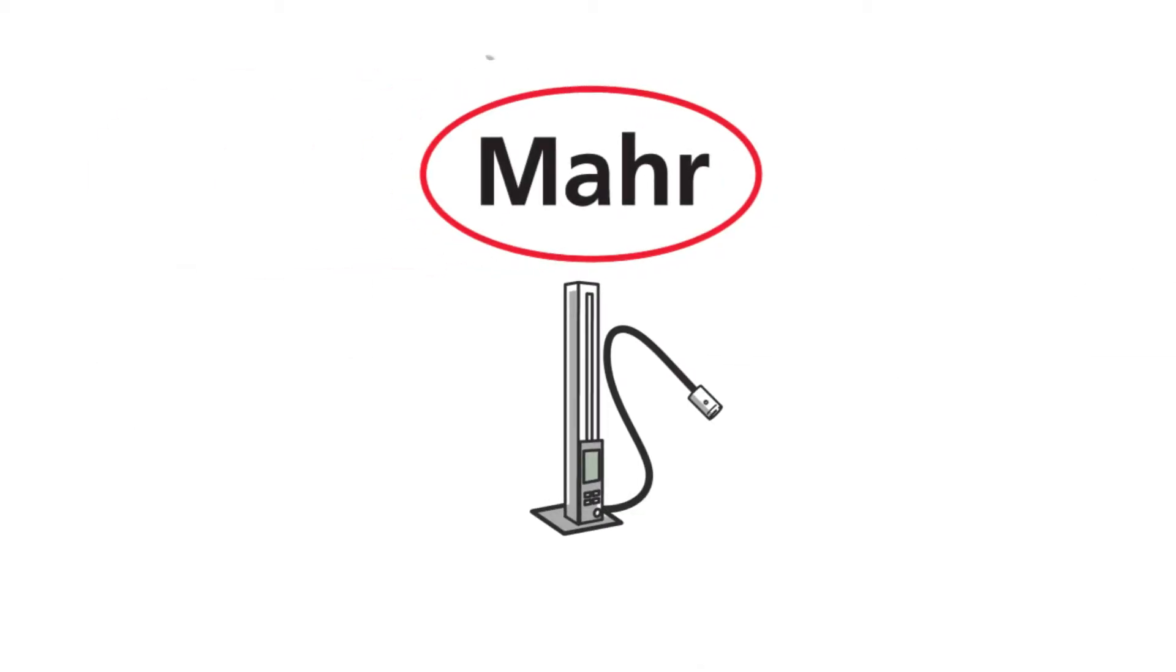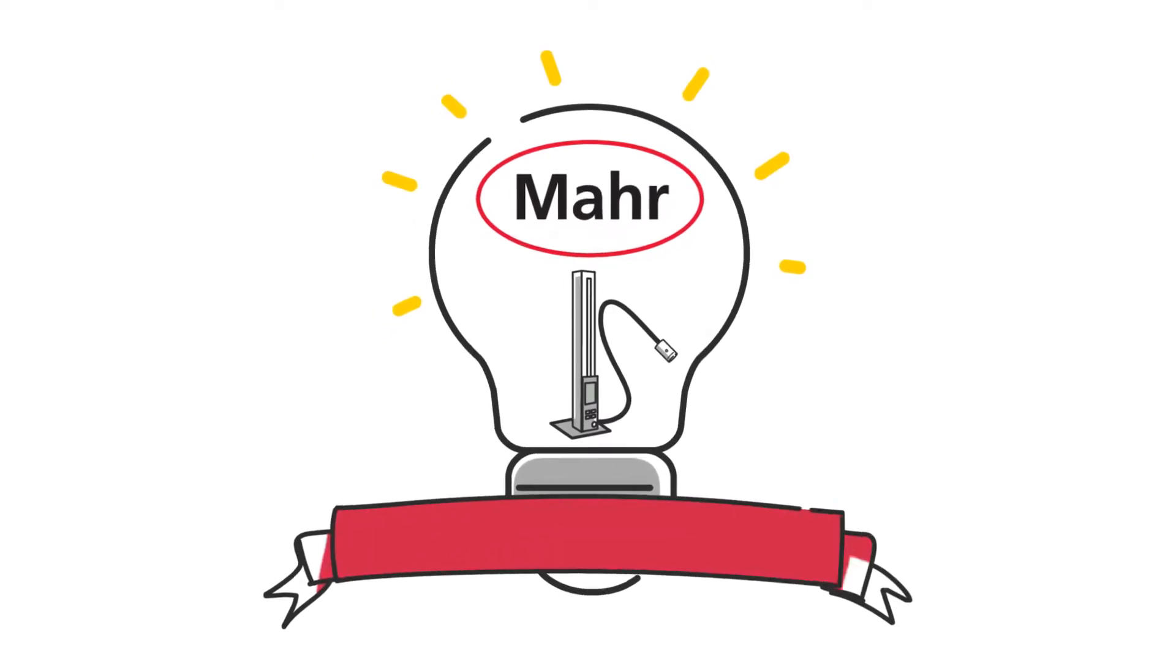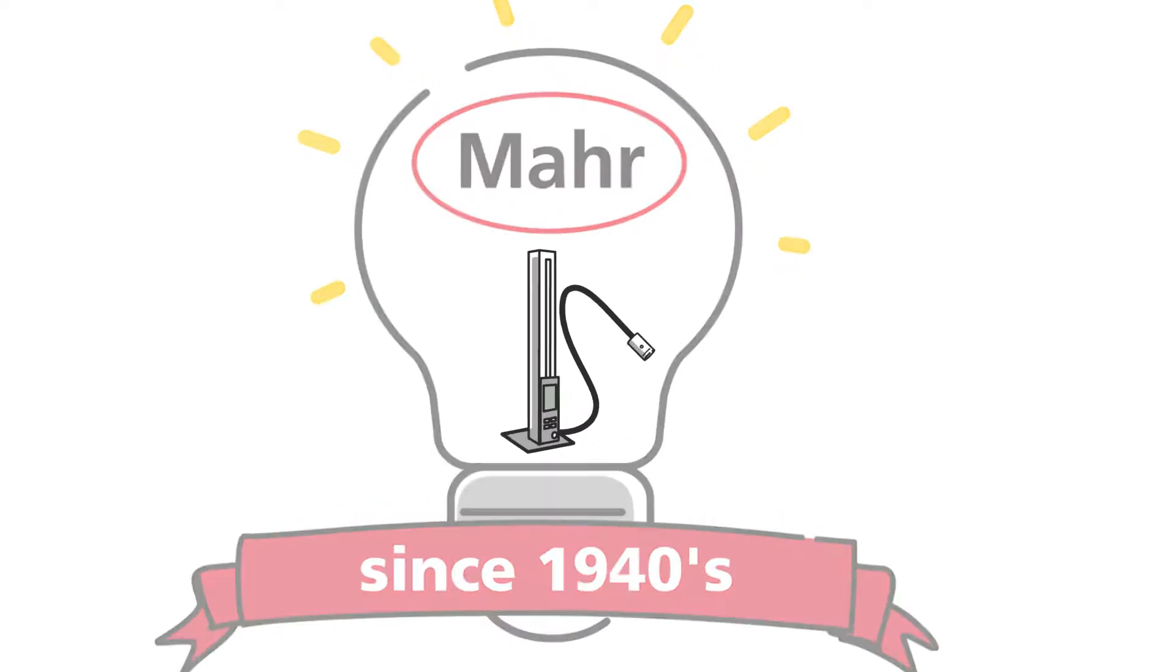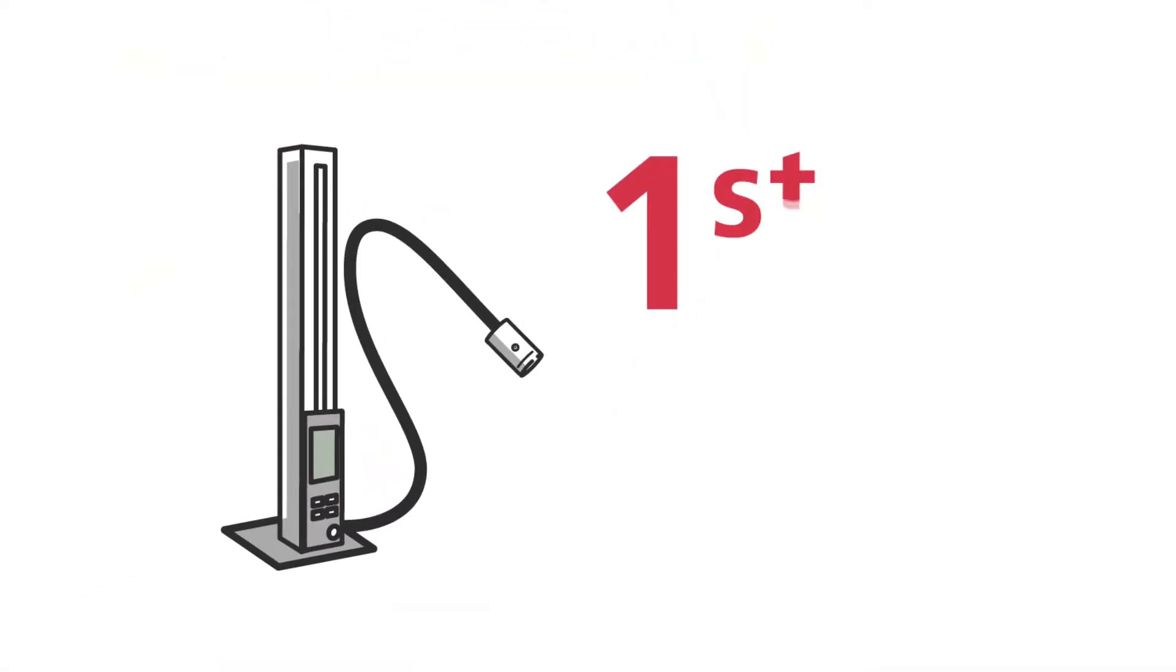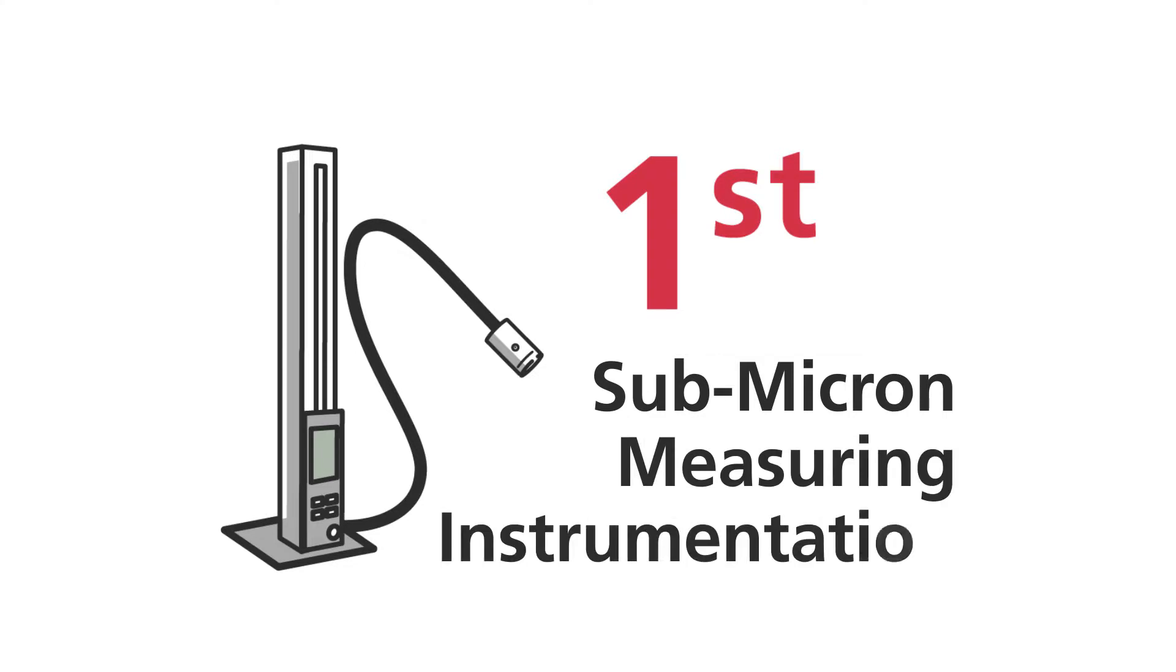Mahr has been an innovator in air gauging since its introduction in the 1940s. In fact, air gauging was the first submicron measuring instrumentation for use in the production environment.